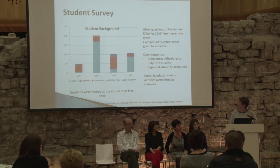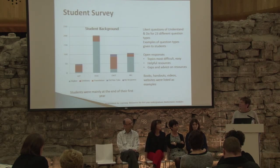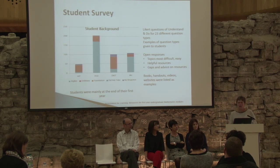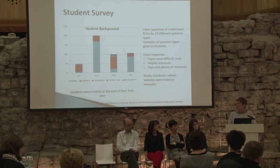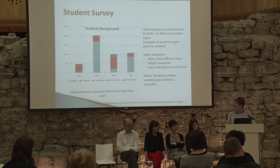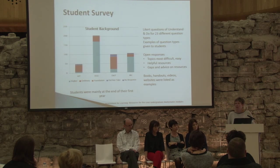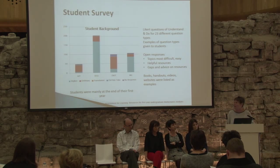As Anne said, there were two surveys: one for students and one for lecturers. In the student survey they were asked for three types of information: background information; a set of 23 Likert questions where they rated their ability to do and understand different question types; and open responses about what topics they found difficult, what resources they used to overcome difficulties, and what advice they'd give us. What the graph shows is the significance of the maths Leaving Cert level — the vast majority of students in DCU and Maynooth had higher level maths, while in AIT and DKIT they were ordinary level, and their responses were dependent on their level.